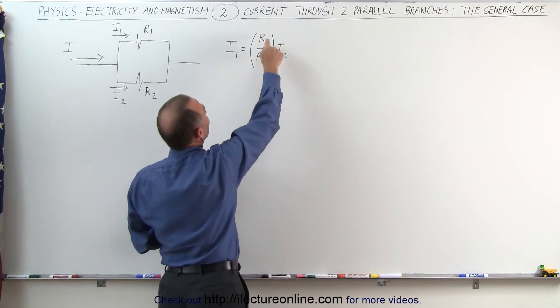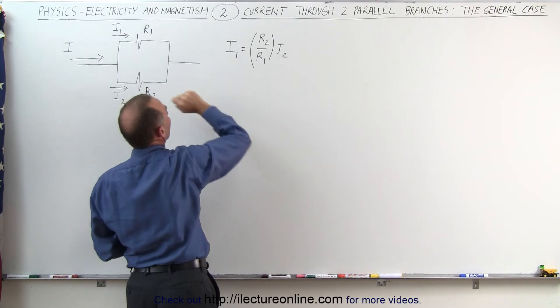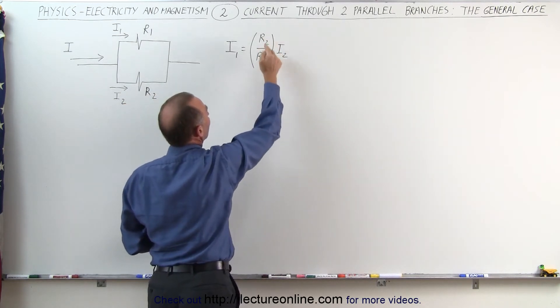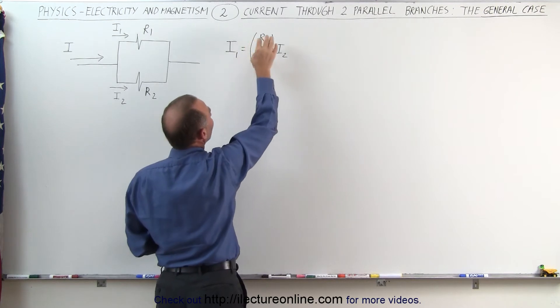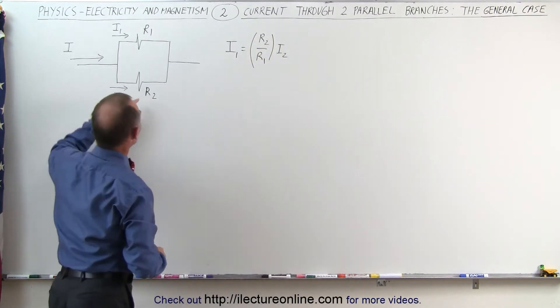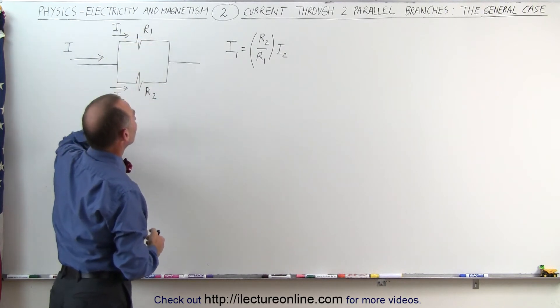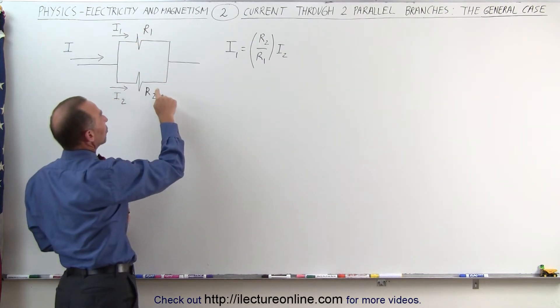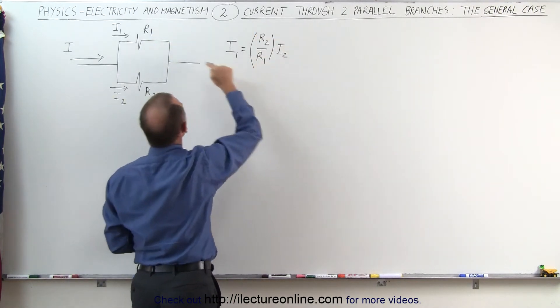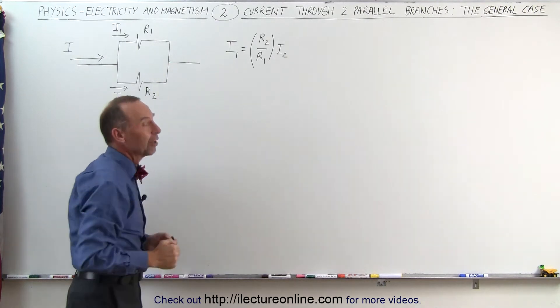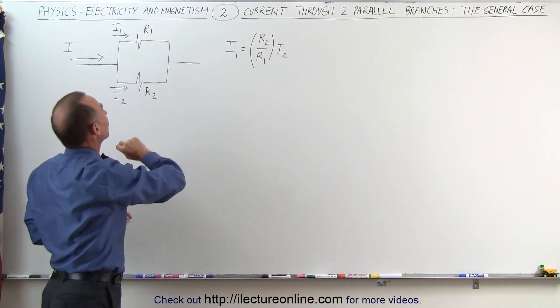But if the resistance in R2 is twice the resistance in R1, if this is double the resistance from this one, then notice 2 divided by 1 or 2 to 1, that's the ratio, that means that I1 will be twice I2. In other words, if this resistor is twice this resistor, the current through that branch will be twice as much. And if this resistor is 3 times this resistor, notice that will be a ratio of 3 to 1, then the current through this branch will be 3 times the current through that branch. It's inversely proportional to the ratio of the resistances.